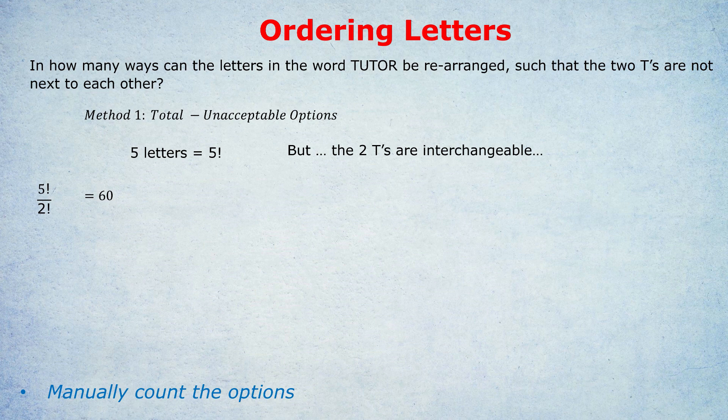For example, the first two T's could be next to each other right at the beginning. So we have T-T, that's unacceptable remember, and then three blanks. Imagine T-T-U-O-R or T-T-O-R-U. But any option or arrangement that begins with two T's next to each other is unacceptable remember. Now why did I write three factorial? Because those three blanks, the remaining three letters U-O-R, could themselves be rearranged in three factorial ways. So it's not like we just have one unacceptable option, T-T blank blank blank, because the three blanks could themselves be rearranged.